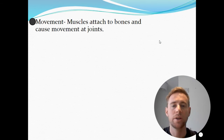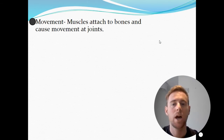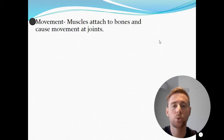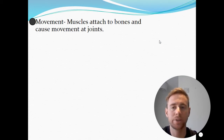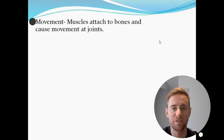Firstly, movement. Our muscles attach to our bones via tendons and they cause movement at joints. Movement can only happen at joints, and without our skeleton we wouldn't be able to move.